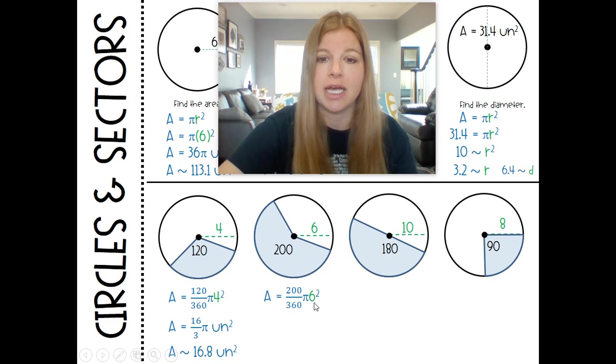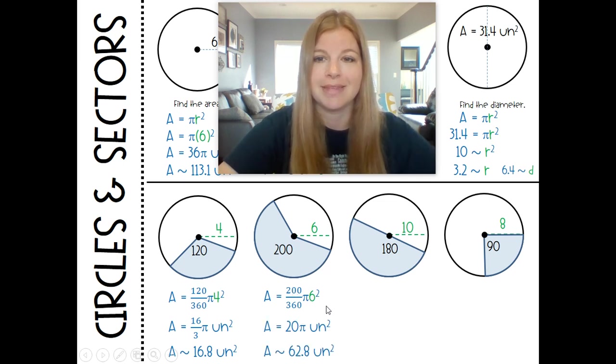6 squared is 36. Multiply that by my fraction times pi. And I end up getting 62.8.